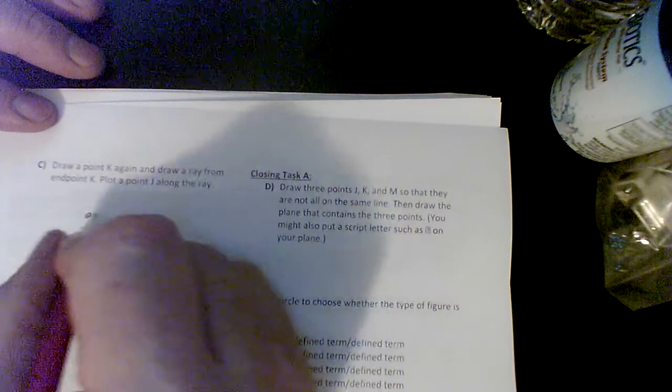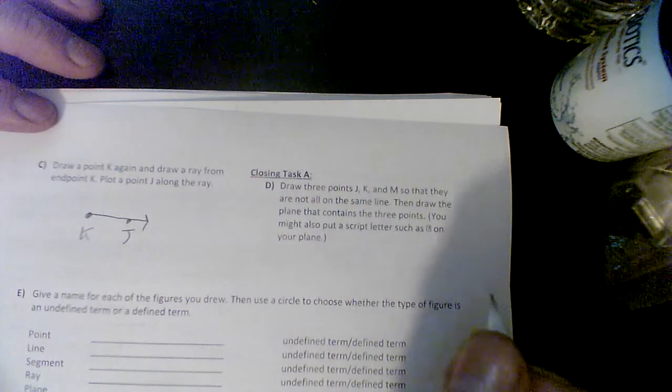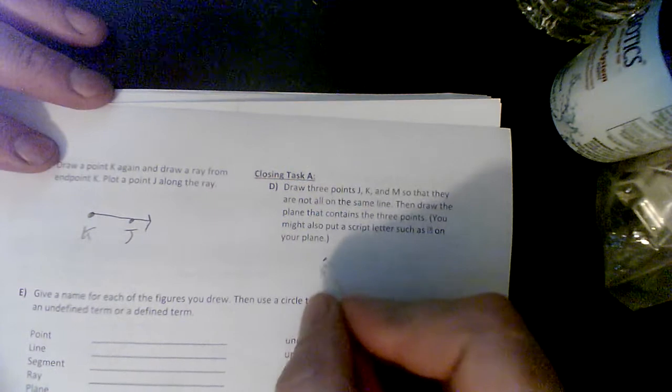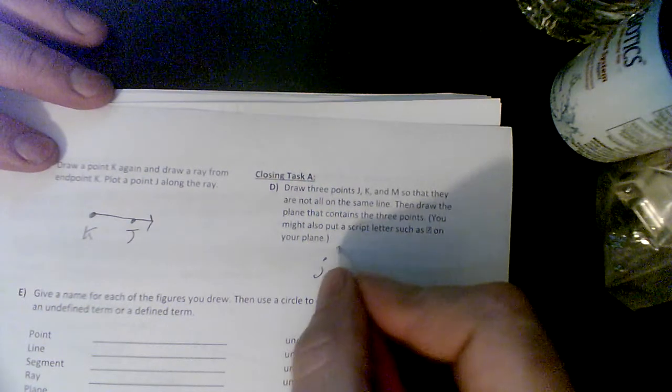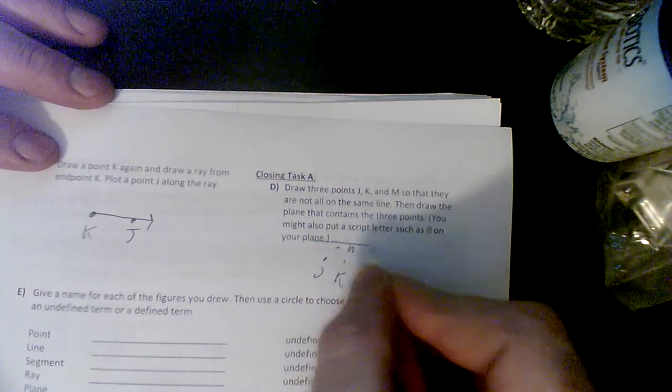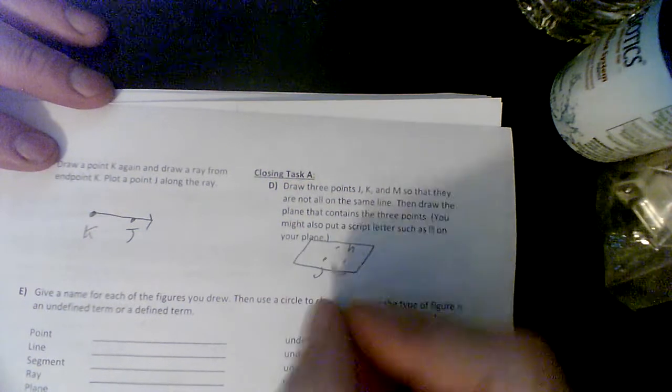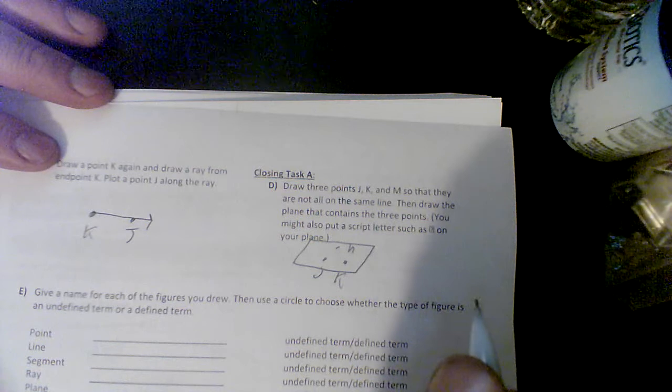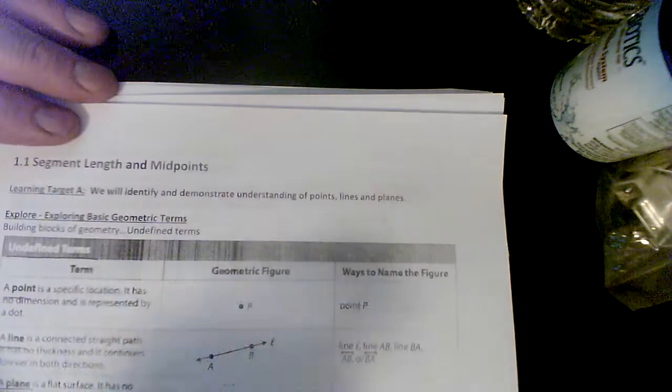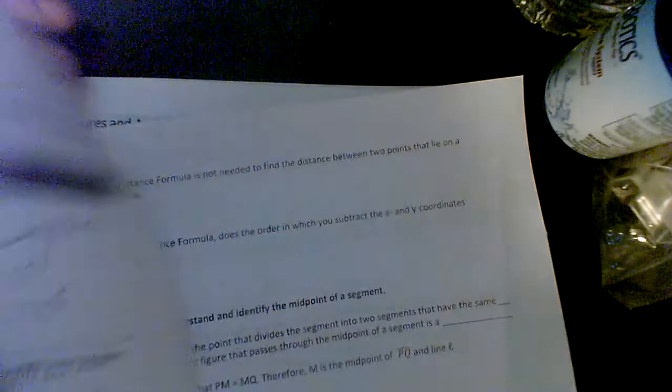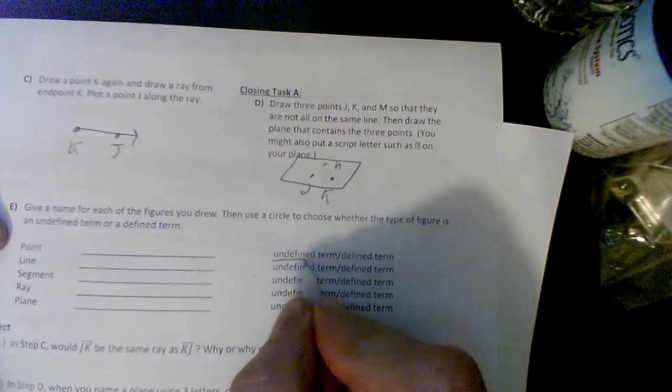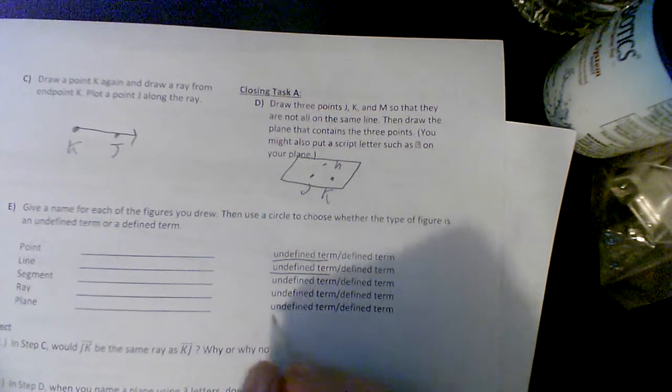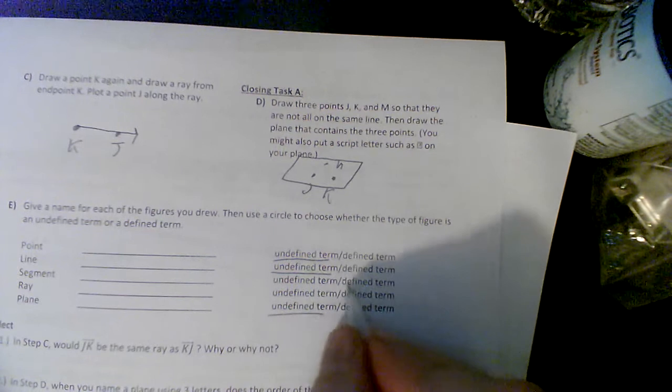Draw point K again and then draw a ray through J. Draw three points J, K, M and we're going to say they all exist on a plane. So that is plane JKM. Remember that a point, a line, and a plane are all undefined. So I come over here and say a point, a line, and a plane are all undefined. The other ones are defined.